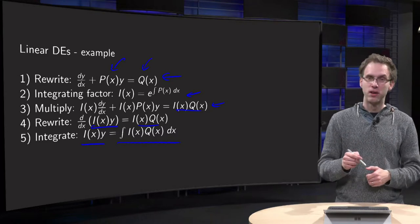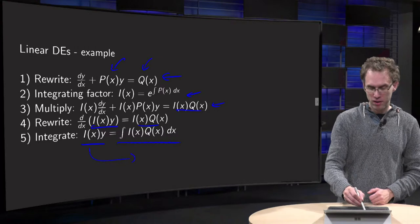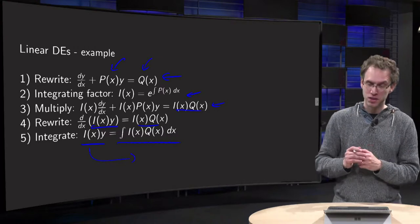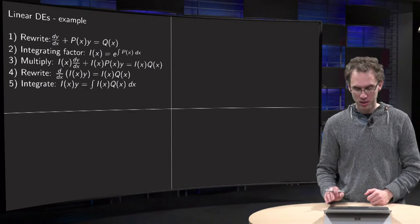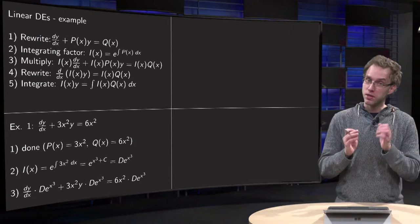So the method can break down here as well. And finally of course you divide by I(x) to find your y(x). So those are the five steps. Let's apply them to a specific example.